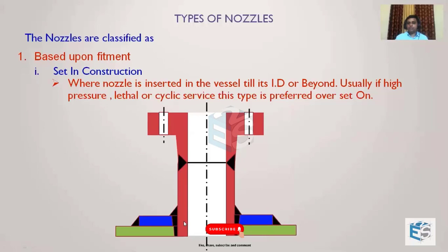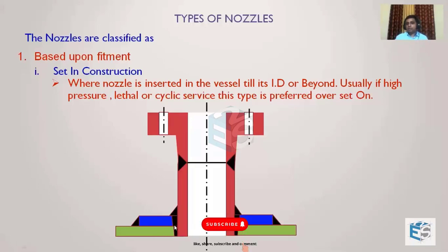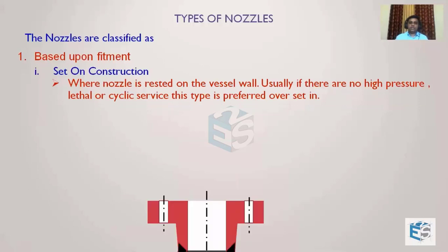Set-in construction is not popular from the manufacturer's point of view. Imagine the nozzle thickness is only 8–10 mm but the shell thickness is 40 mm — the groove weld must be prepared and filled for the entire 40 mm depth, which is very labor-intensive. However, it gives very good support at the junction to the nozzle, which is why most customers recommend this inserted or set-in type of construction.